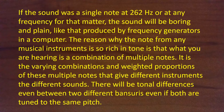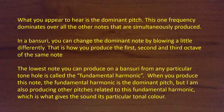It is the varying combinations and weighted proportions of these multiple notes that give different instruments their different sounds. There will be tonal differences even between two different Bansuris, even if both are tuned to the same pitch. What you appear to hear is the dominant pitch — this one frequency dominates over all the other notes that are simultaneously produced. In a Bansuri, you can change the dominant note by blowing a little differently. That is how you produce the first, second, and third octave of the same note. The lowest note you can produce on a Bansuri from any particular tone hole is called the fundamental harmonic. When you produce this note, the fundamental harmonic is the dominant pitch, but you are also producing other pitches related to this fundamental harmonic, which is what gives the sound its particular tonal color.